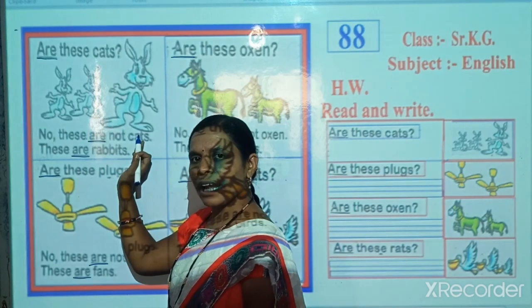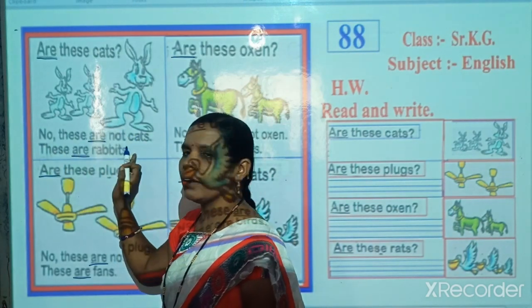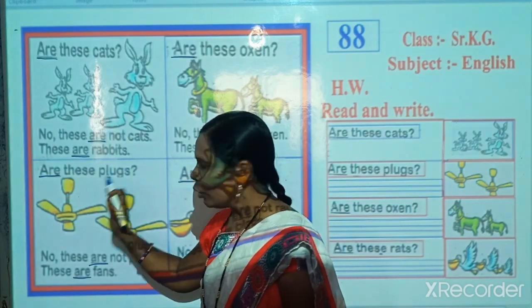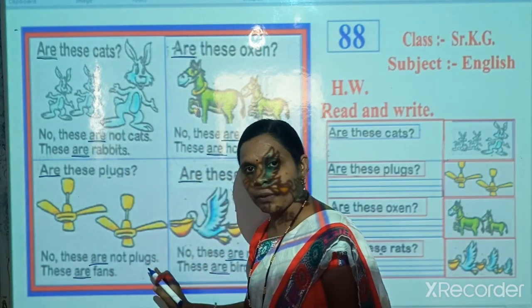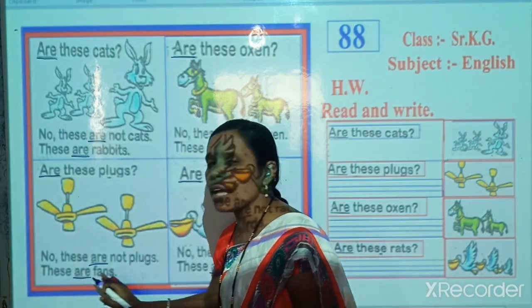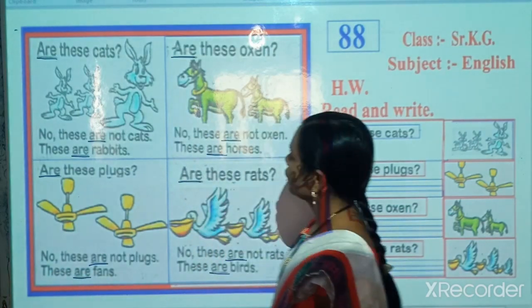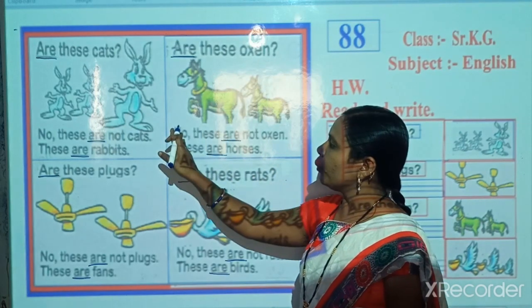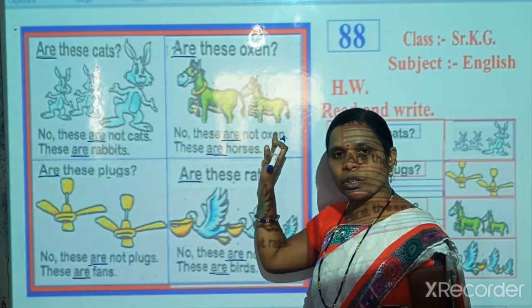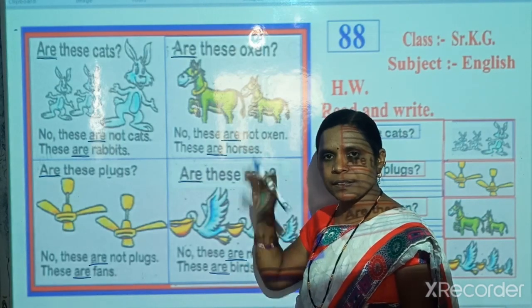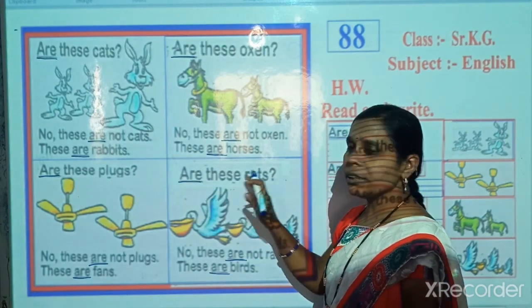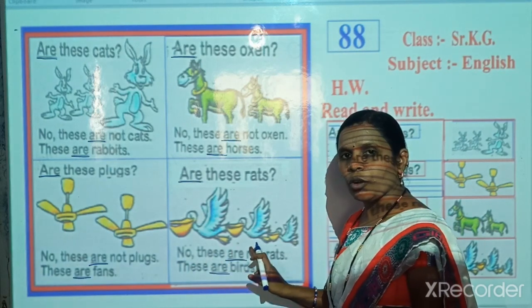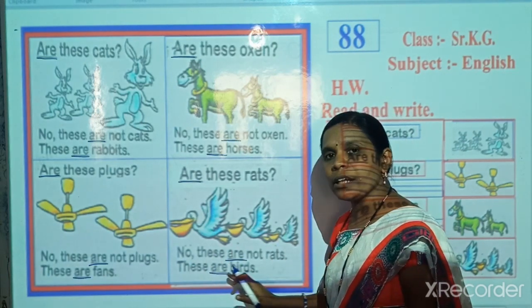Once again, read after me. Are these rabbits? No, these are not cats. These are rabbits. Are these plugs? No, these are not plugs. These are friends. Are these oxen? No, these are not oxen. These are horses. Are these rats? No, these are not rats. These are birds.